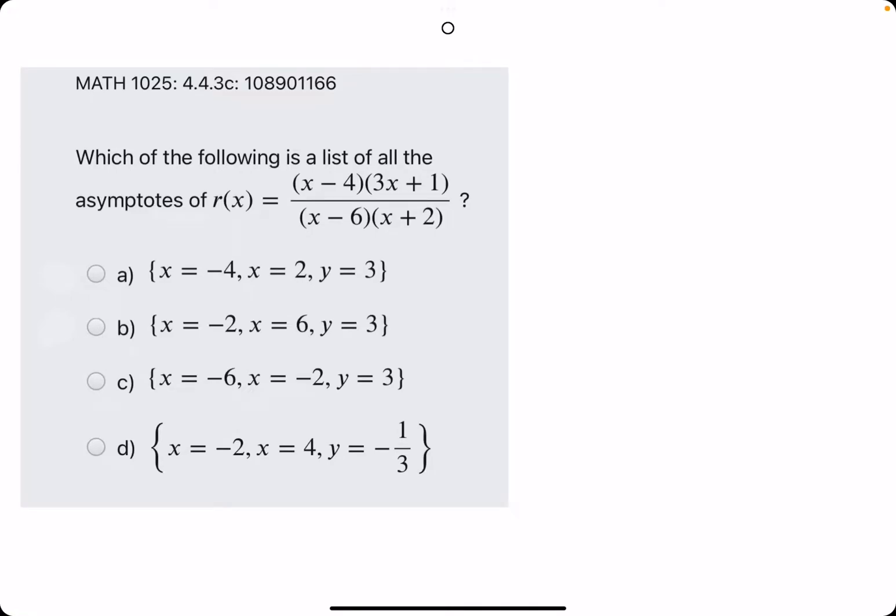Okay. In this problem, they ask which of the following is a list of all the asymptotes of r of x. And so when it's in this factored formula like this, it actually helps us out more so with identifying the vertical asymptotes.